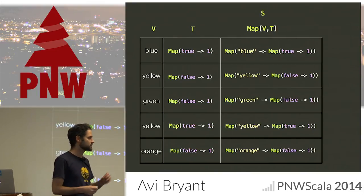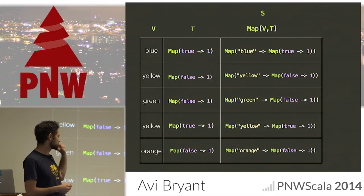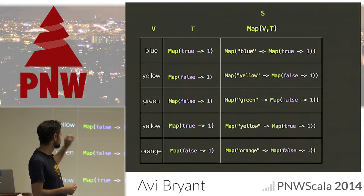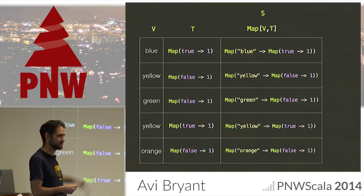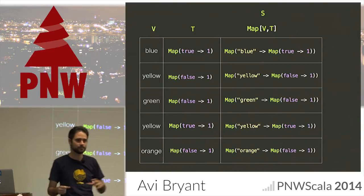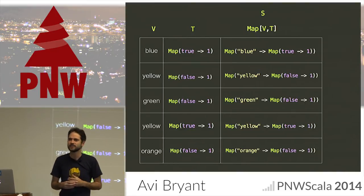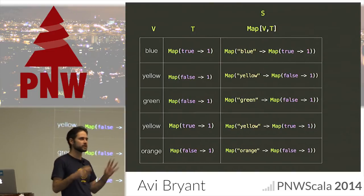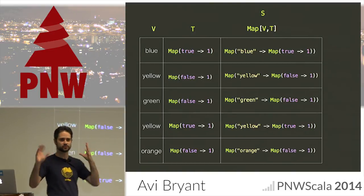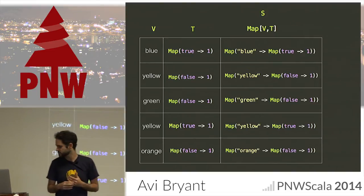We want to assemble in one place a single map which has the distribution summed up for all observations that had, say, yellow, and the distribution summed up for all observations that had blue, and so on. We do that by first creating tiny joint distributions just for a single observation — take blue, take its target, create a map from blue to the target, and so on — individually for each row, then sum them all up. In terms of linear algebra, you can think of these as sparse matrices: we're building a sparse matrix for each observation and then summing up the sparse matrices.